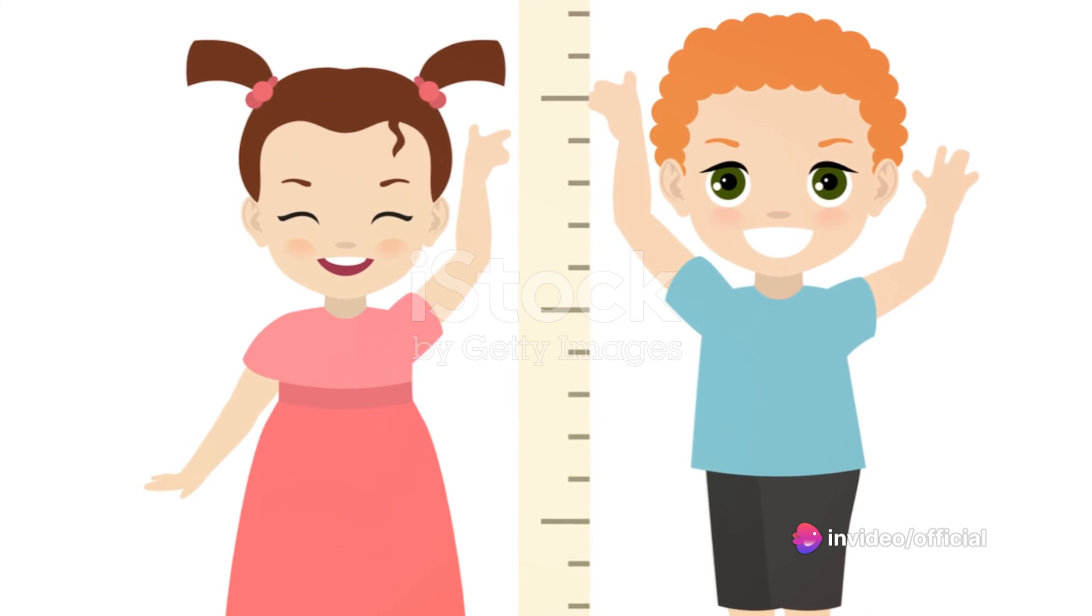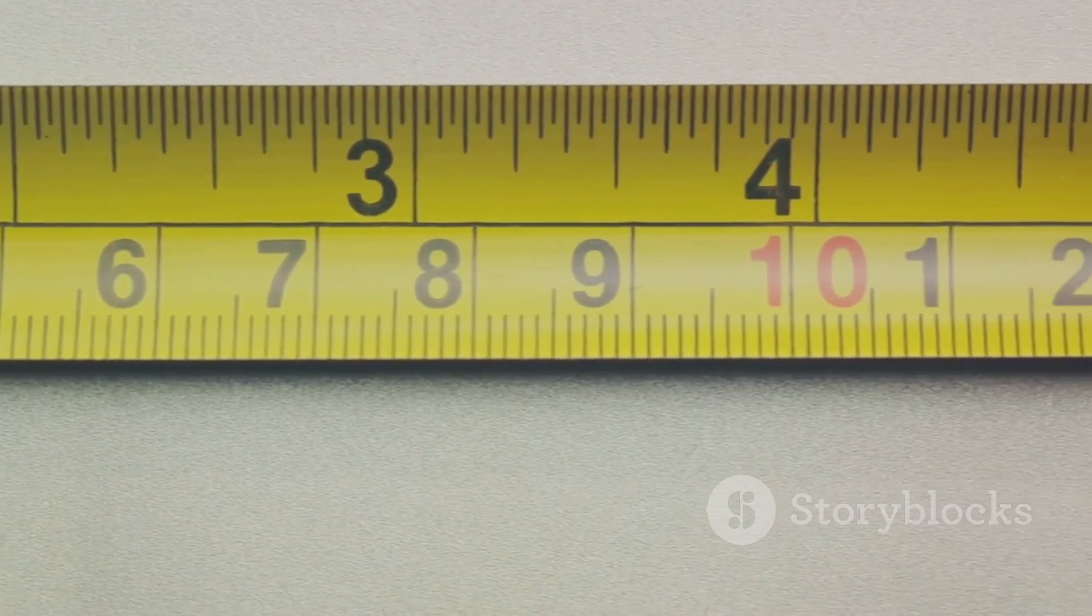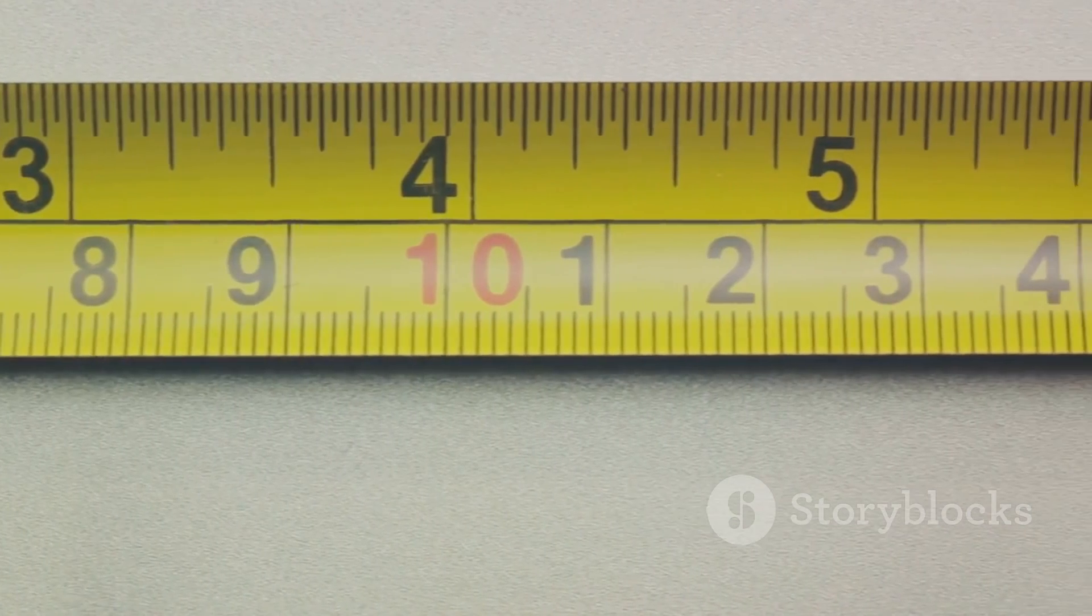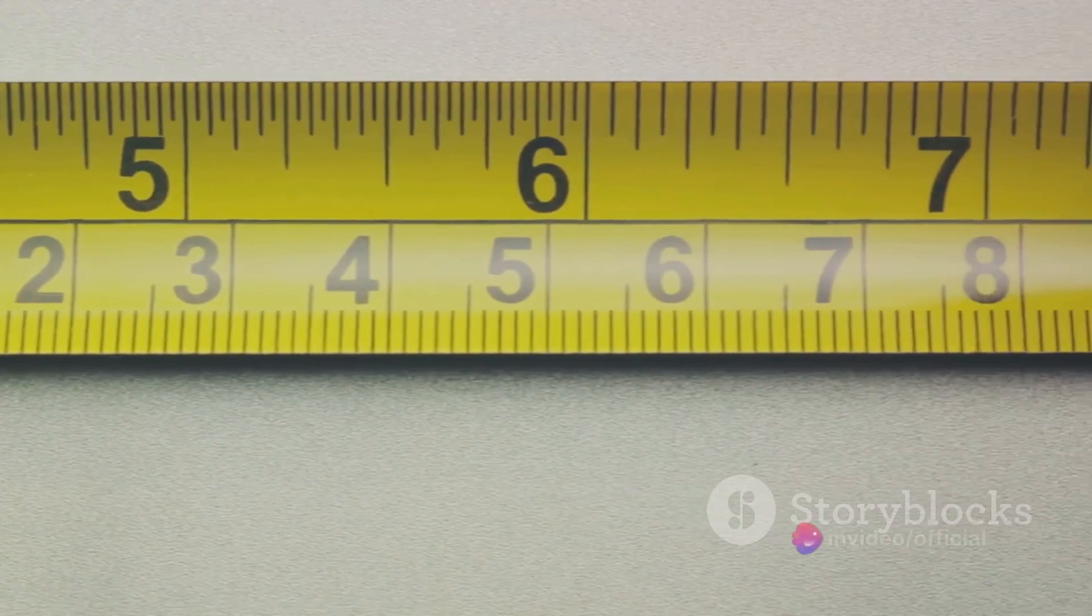Imagine you're trying to figure out the average height of a group of people. You could measure each person, add up all the heights, and divide by the number of people. This is a simple average, or mean. Now suppose you want to know more about the distribution of heights. You might calculate the variance or the standard deviation. These are examples of moments, statistical measures that give us insight into the shape, spread, and other characteristics of a data set.